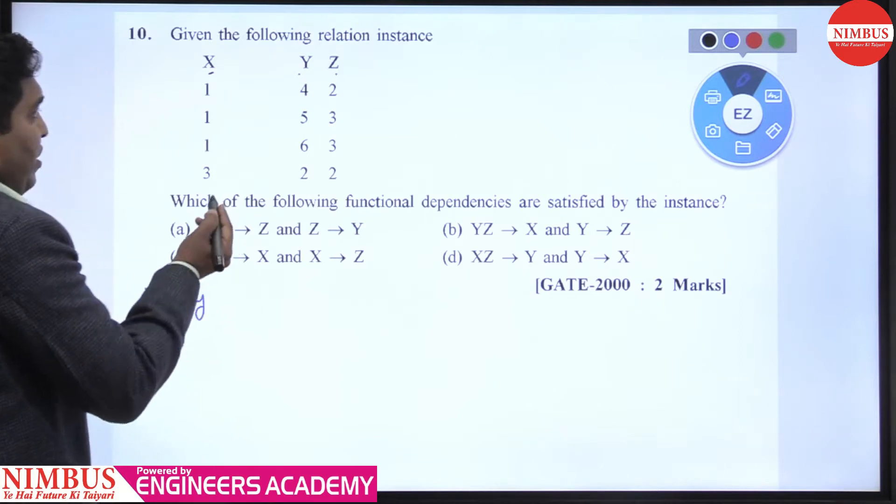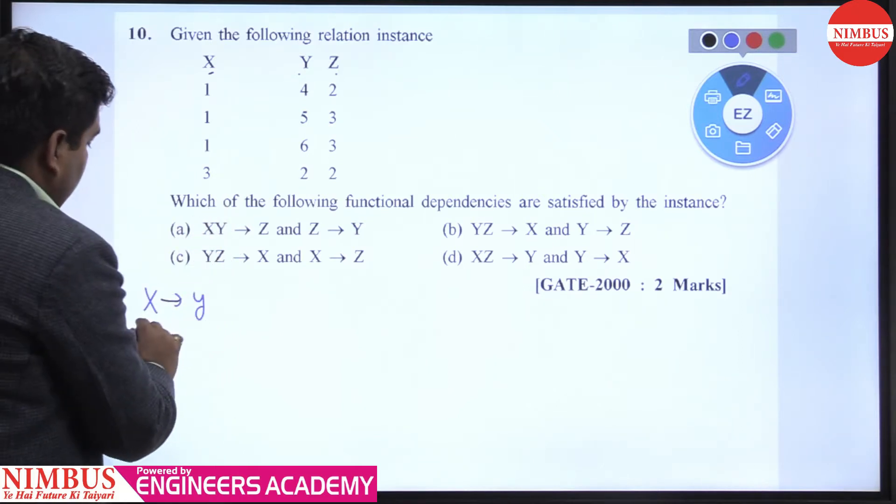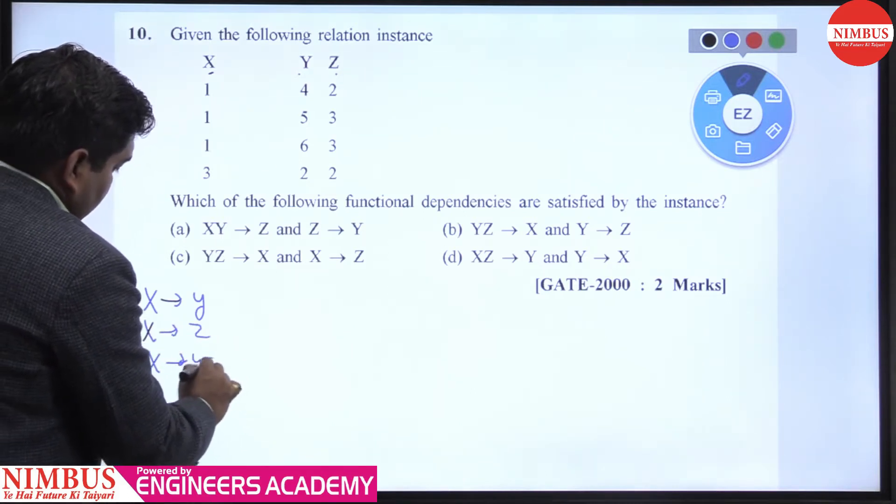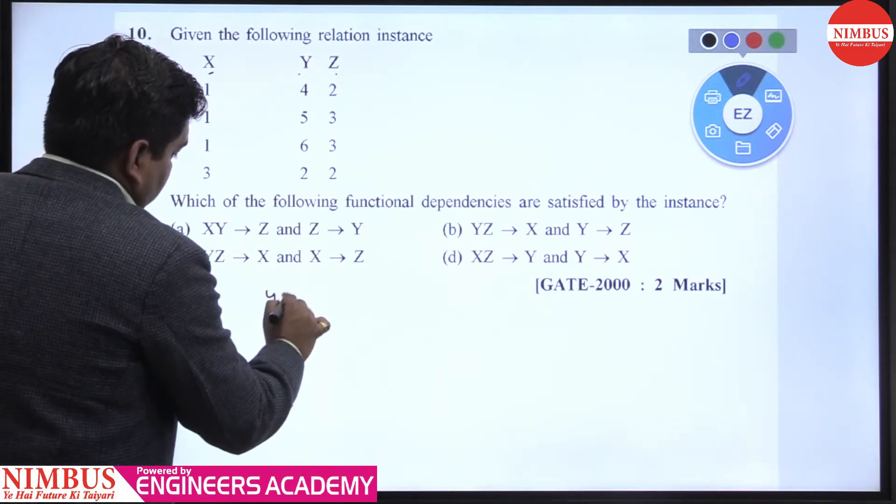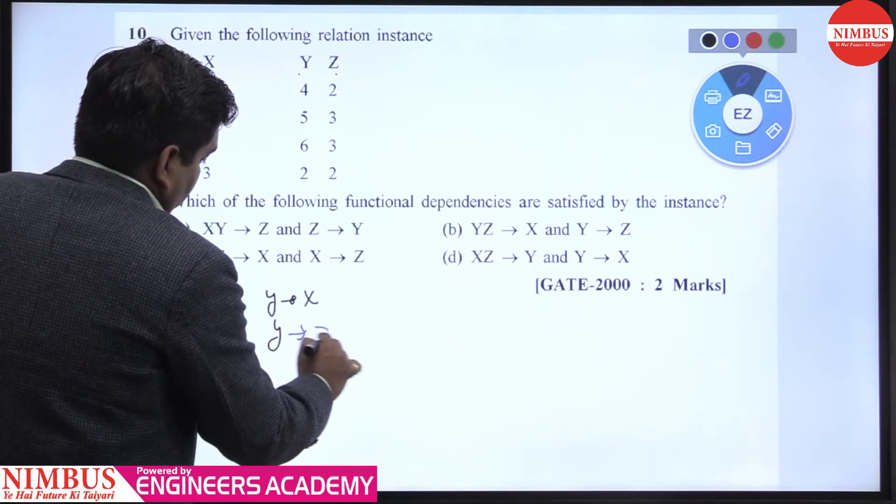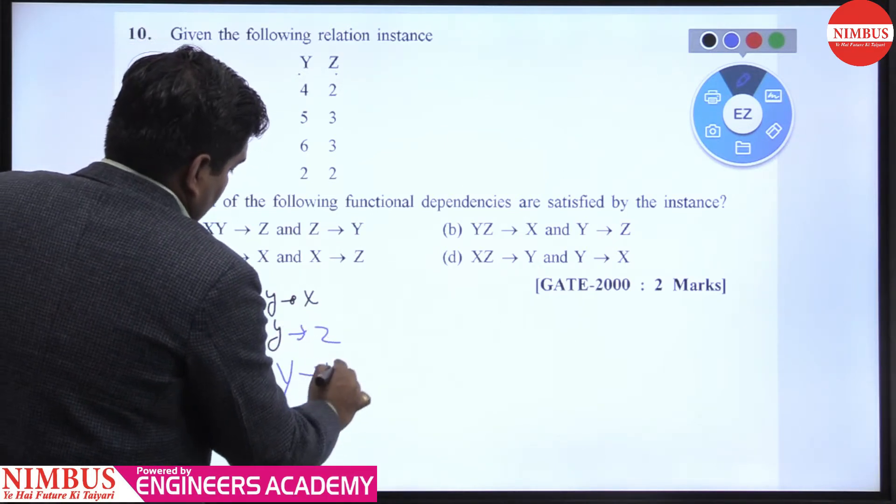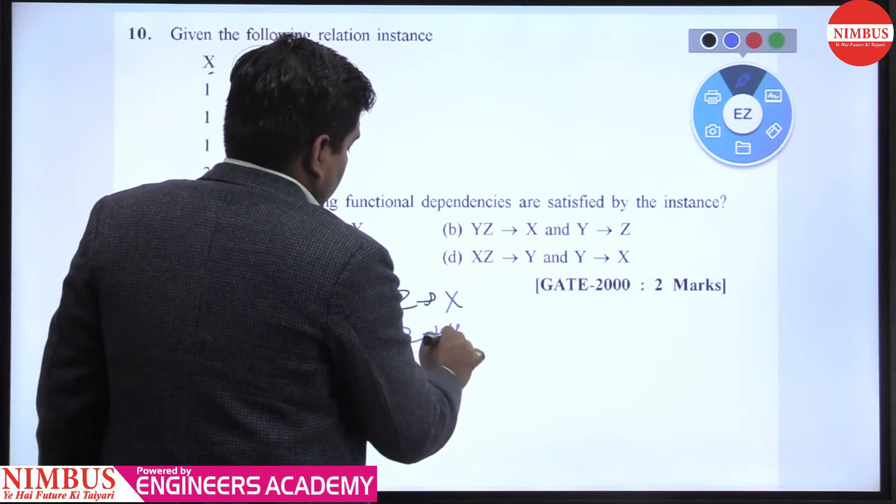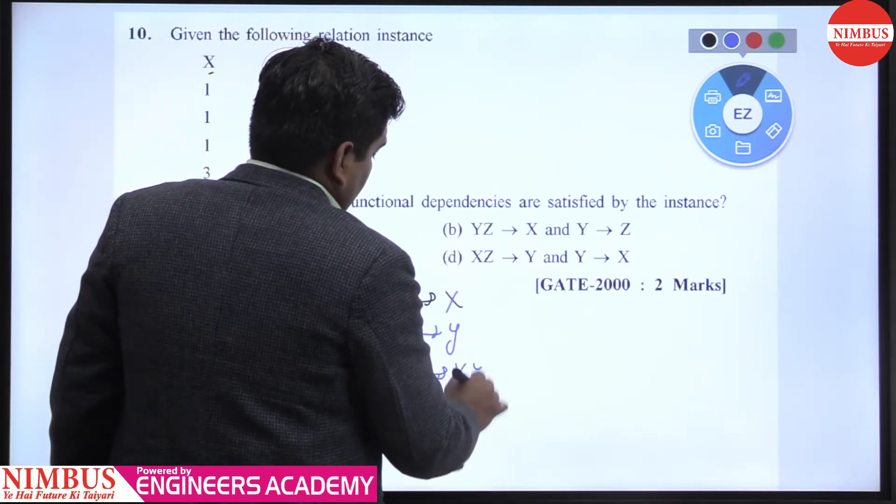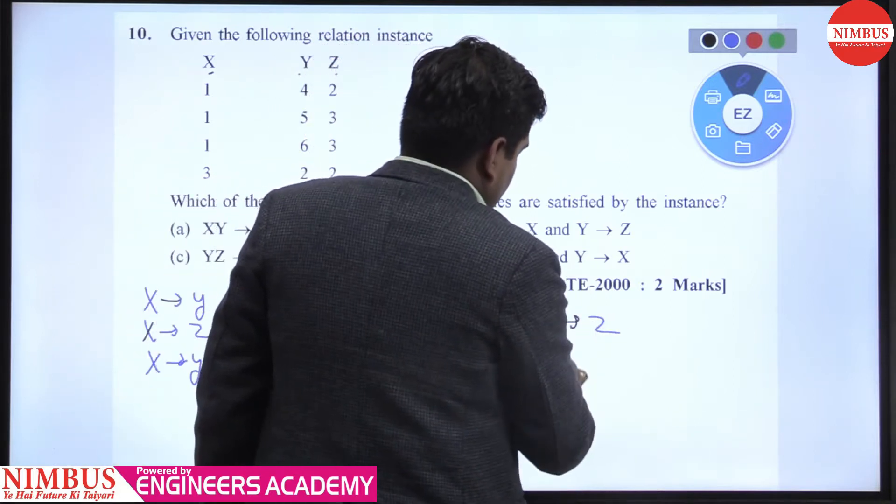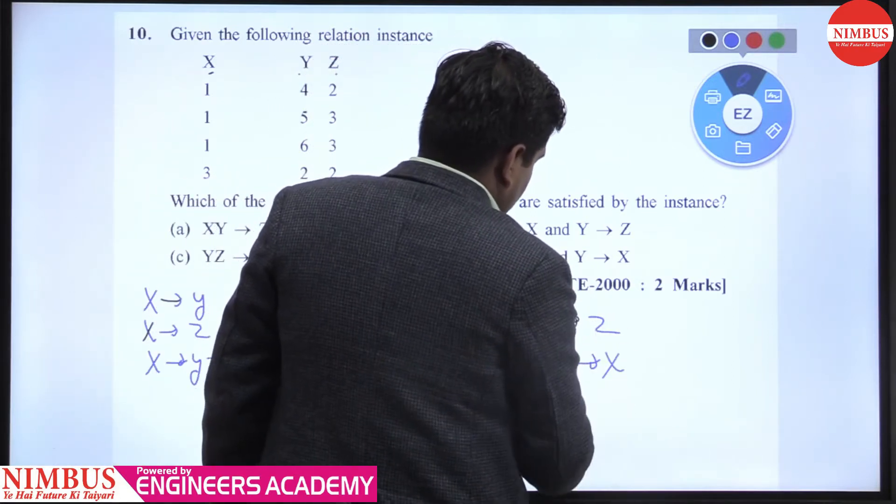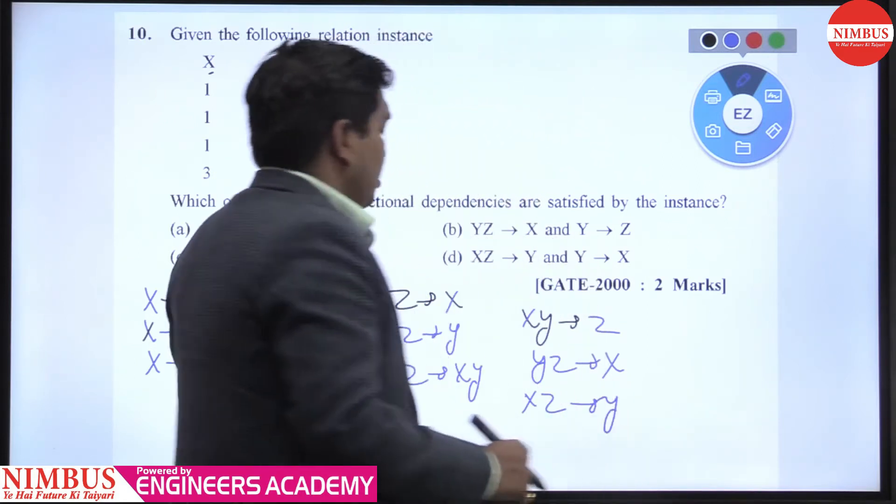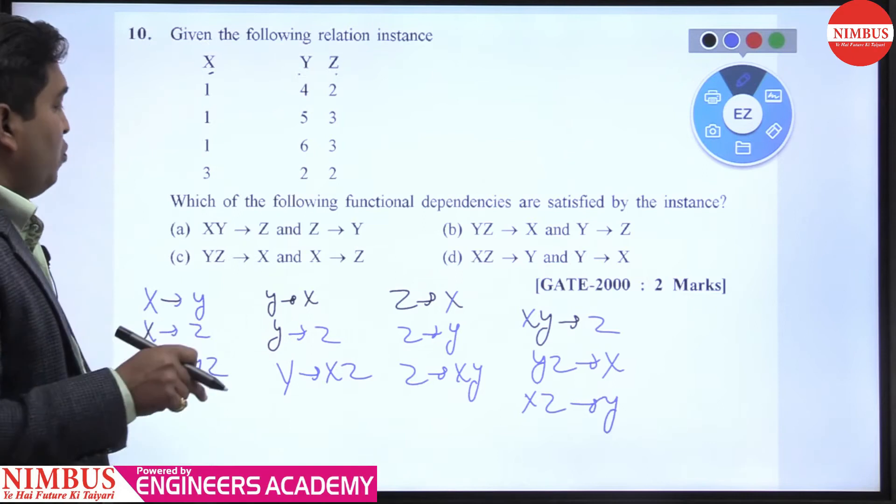If non-trivial FDs combination: X→Y, X→Z, X→YZ, then Y→X, Y→Z, Y→XZ, then Z→X, Z→Y, Z→XY, then XY→Z, YZ→X, and XZ→Y. These are all the non-trivial FDs combinations.